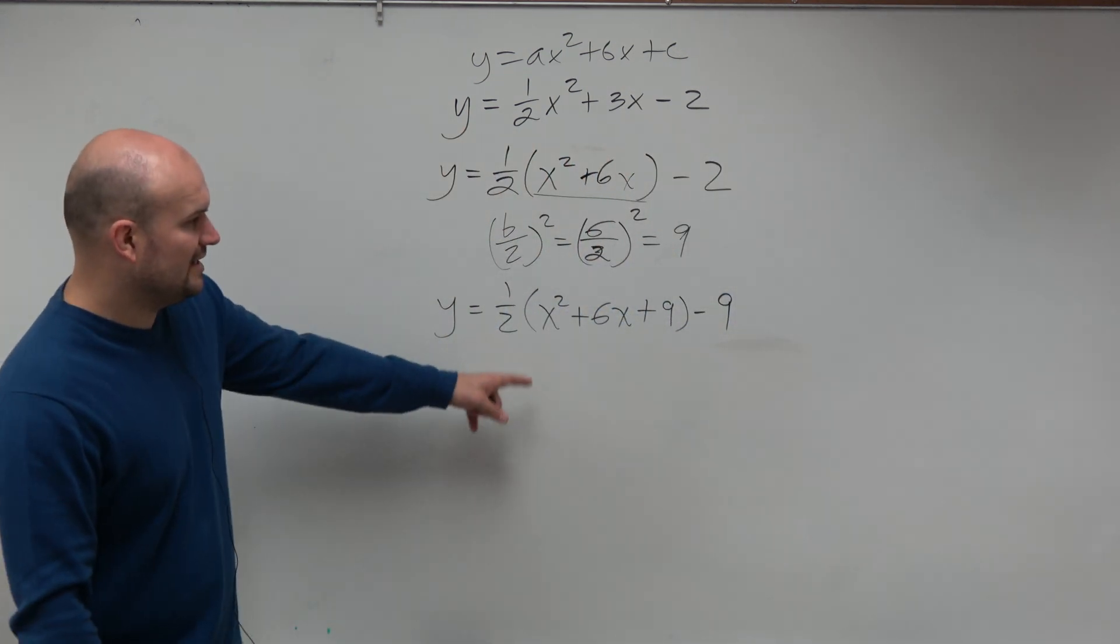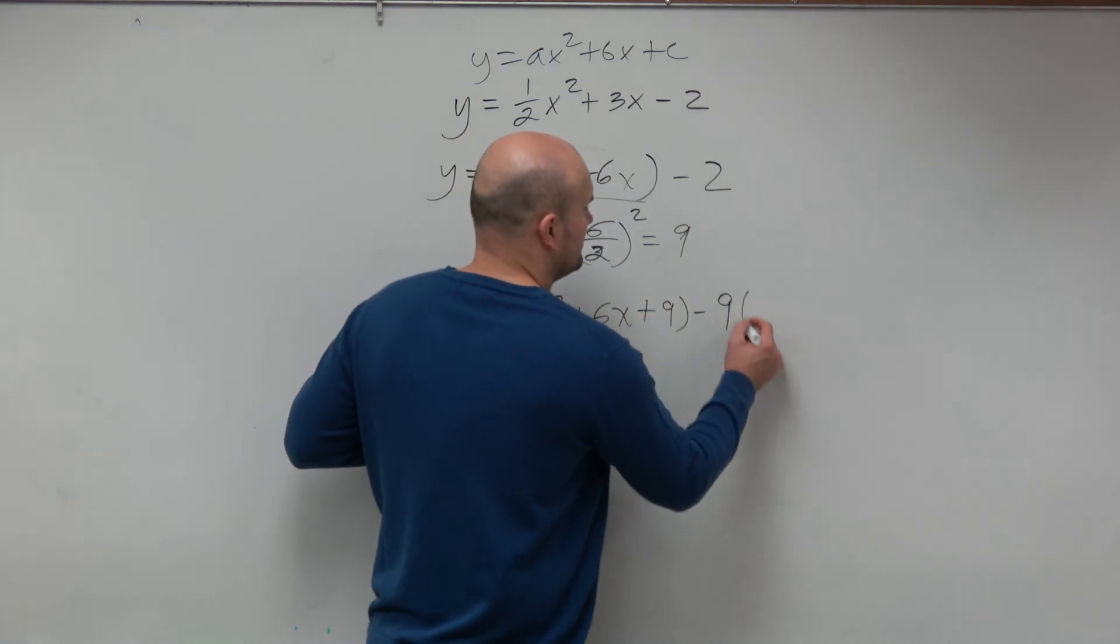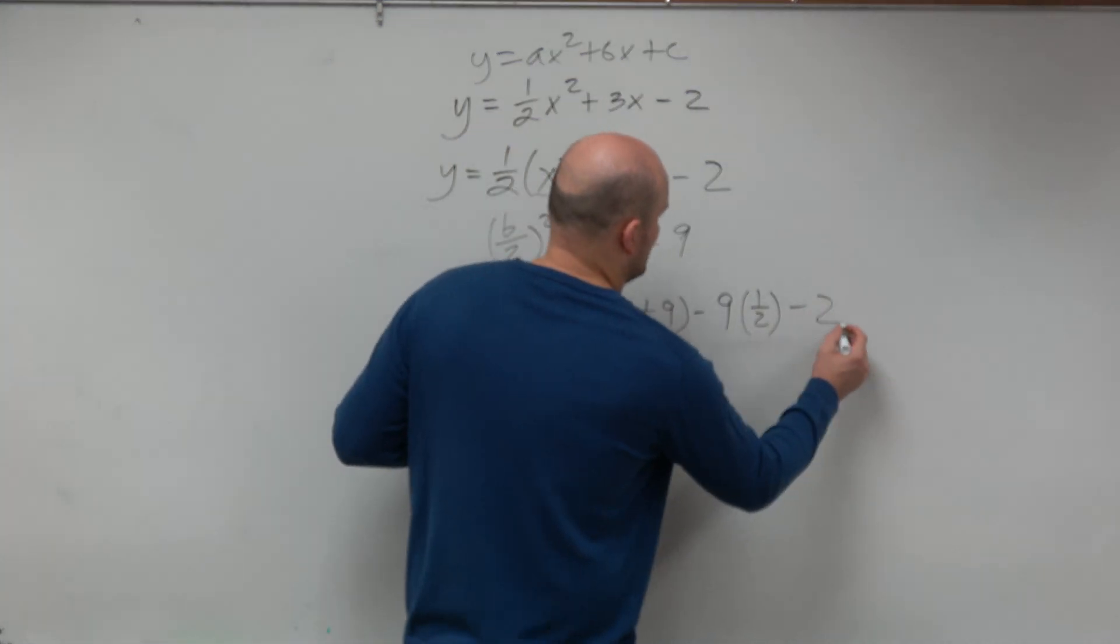And if we're going to subtract it, I really didn't add a 9 here. I added a 9 that's multiplied by 1 half. So here, I have to subtract the 9 multiplied by 1 half. And then don't forget about the subtract 2 at the end.